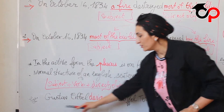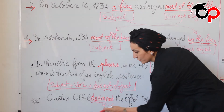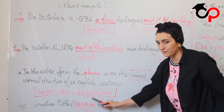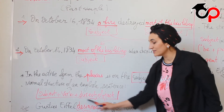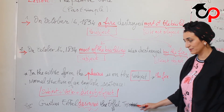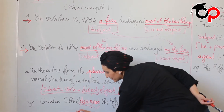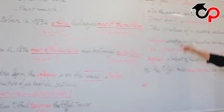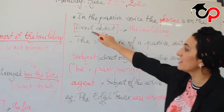Let's see another example. People designed the Eiffel Tower. This verb is in the past simple. It is a regular verb. As you see here, the verb 'to design' is a transitive verb — it needs a direct object. This is past tense.